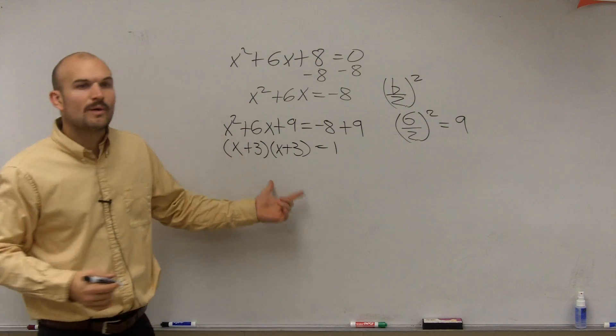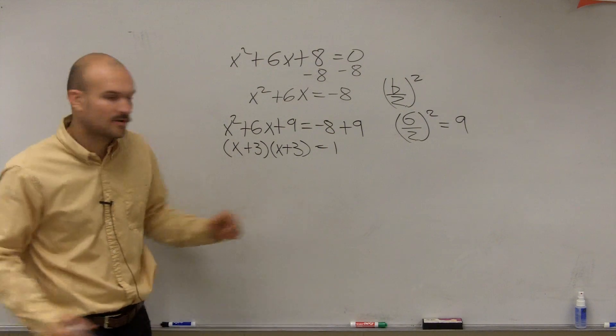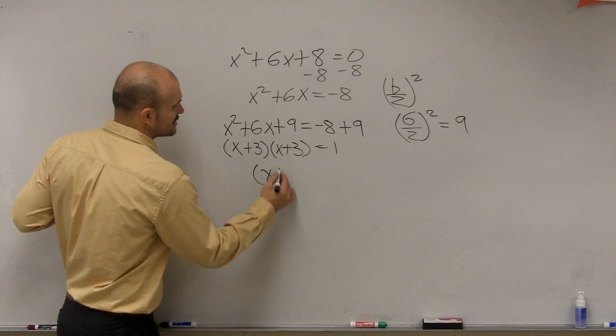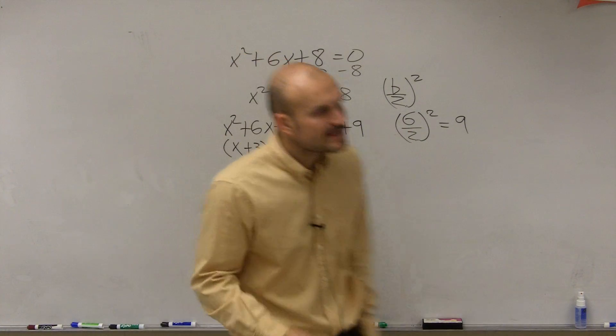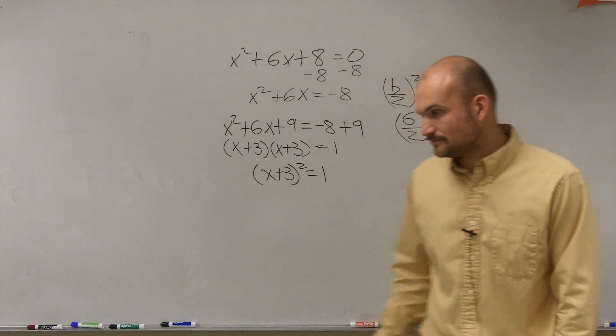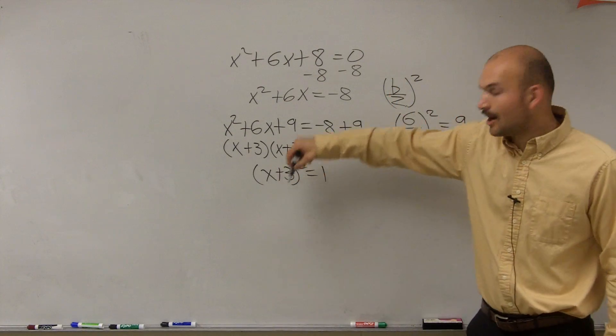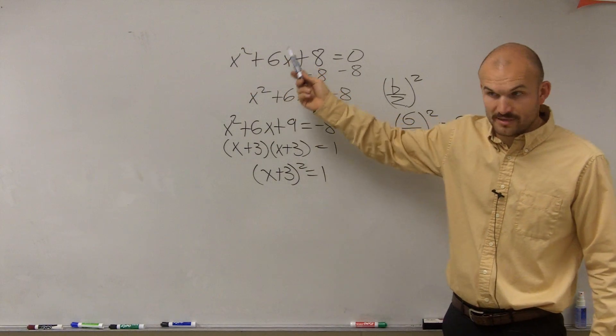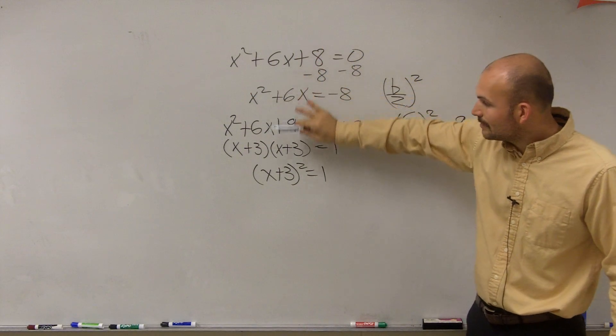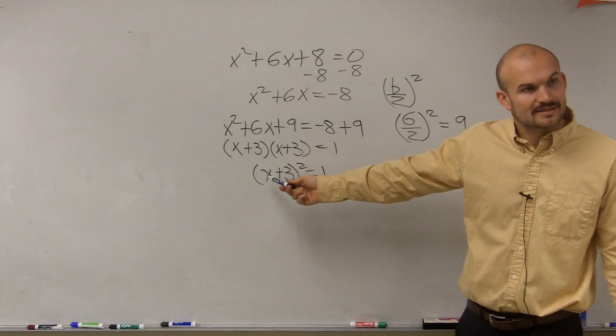Equals 1. But we want to go one step further to write it as a perfect square, which is x plus 3 squared equals 1. And the reason why we want to do that is because now I've gone from two variables, one being squared, one being linear, to now one variable that's linear.